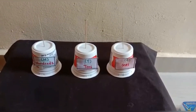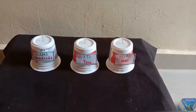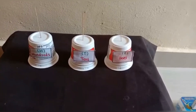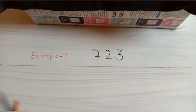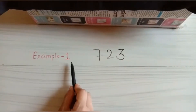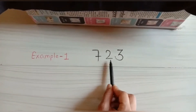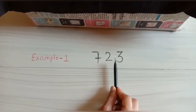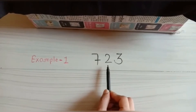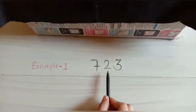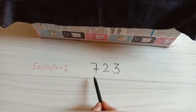How do we represent a three digit number on an abacus? Example 1: the number is 723. This number is a three digit number.